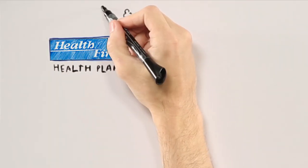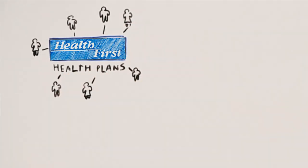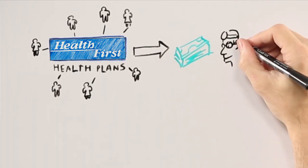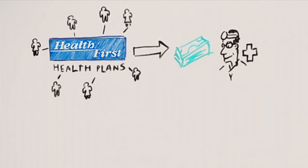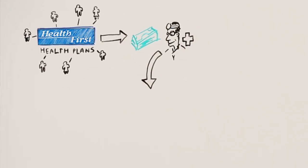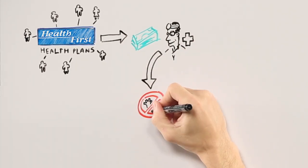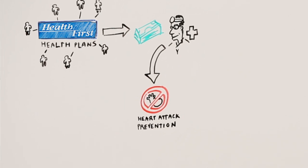As we insure more people with Health First health plans, it will give us an increasing ability to pay physicians and other parts of the care system to prevent illness and to promote wellness. Continuing with my previous illustration, we can create payment models that will enable the cardiologist to prevent heart attacks. Now that will be health care.